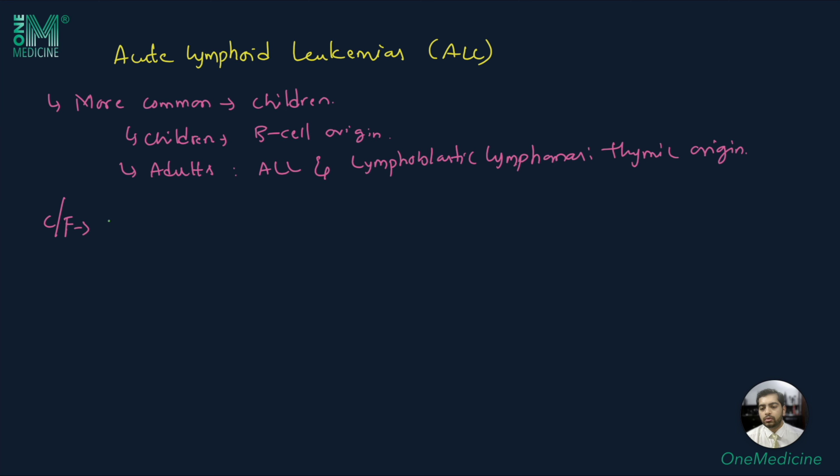Clinical features usually include features of marrow failure such as anemia, thrombocytopenia, and increased risk of infections. Patients can also present with hepatosplenomegaly and adenopathy. In men, there can be testicular enlargement.